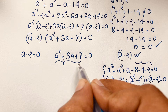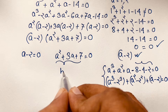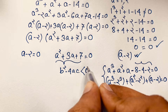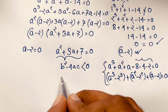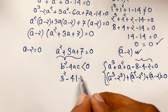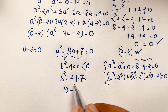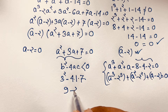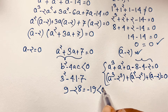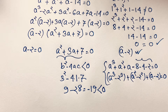For the quadratic factor a² + 3a + 7 = 0, we check the discriminant b² minus 4ac. Here b is 3, a is 1, c is 7, so discriminant equals 9 minus 28, which is minus 19. Since this is less than 0, the roots are complex numbers. So the quadratic case gives only complex solutions.